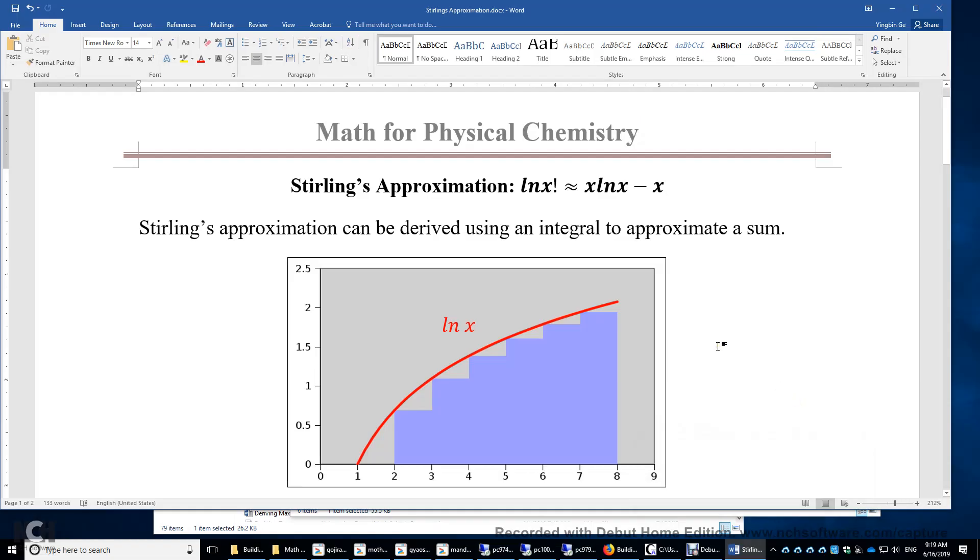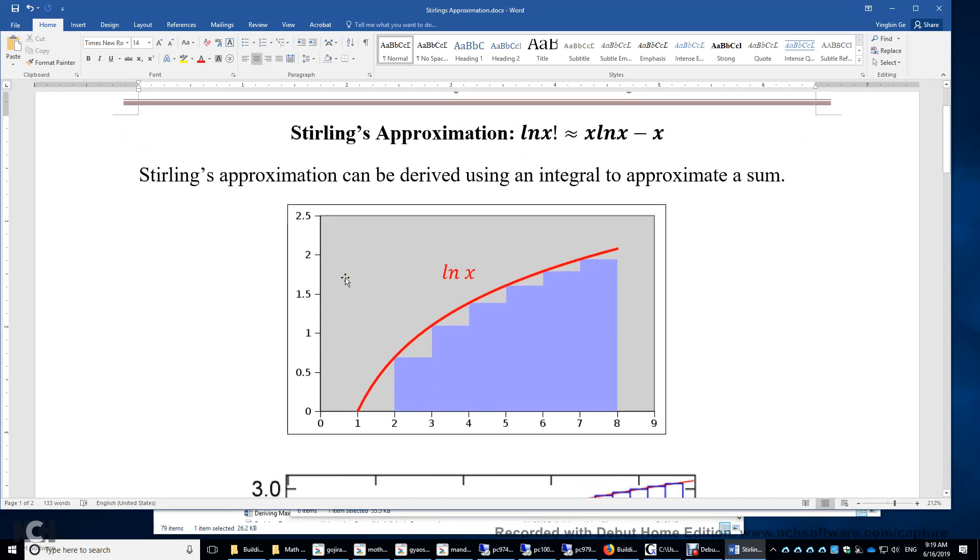In this video, I will introduce Stirling's approximation. The natural logarithm of x factorial is approximately equal to x times ln x minus x. This approximation can be derived using this graph. We will use an integral to approximate a sum.